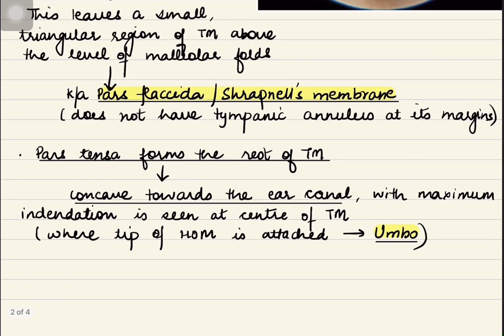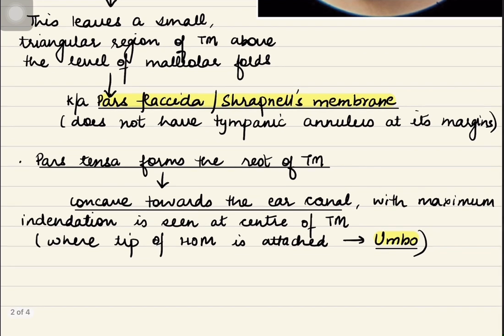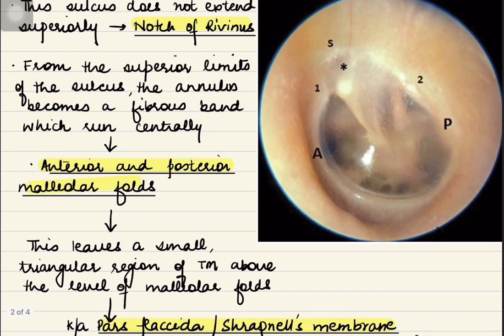The pars tensa is concave towards the ear canal, and the maximum point of concavity or indentation is at the tip of the handle of malleus. This point is known as the umbo.